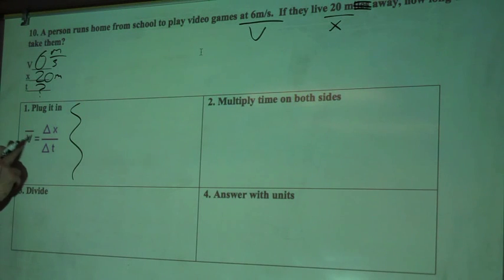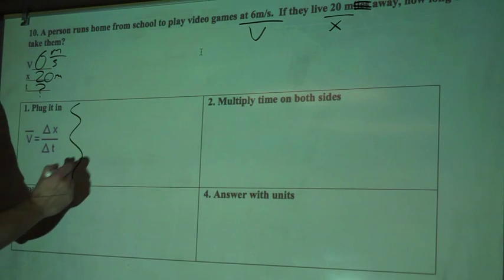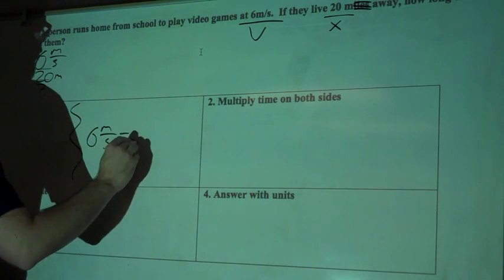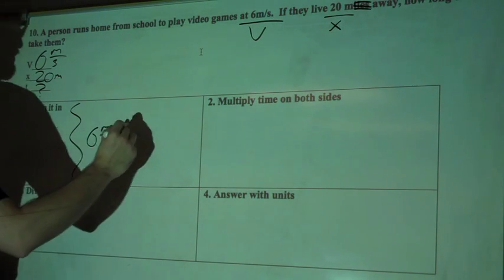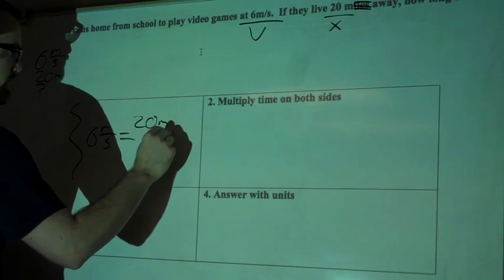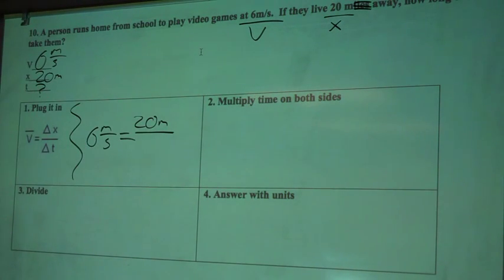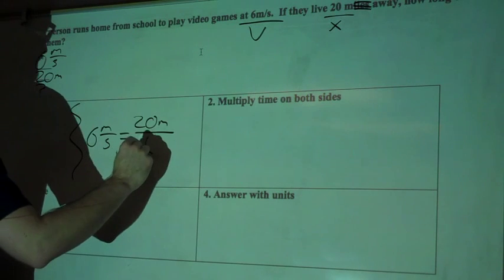We've got average velocity equals change in distance over change in time. Excuse me. I'm going to plug my values in for my variables. So my velocity, I know, is 6 meters per second. Change in distance: 20 meters is my X. So I'll write 20 meters up here. And I don't know my time.